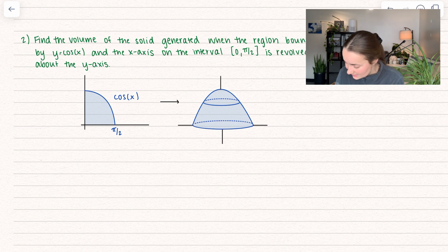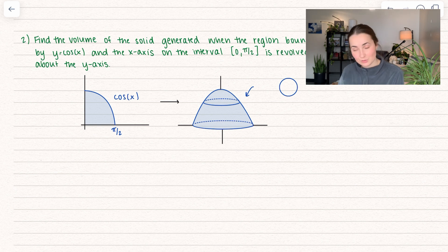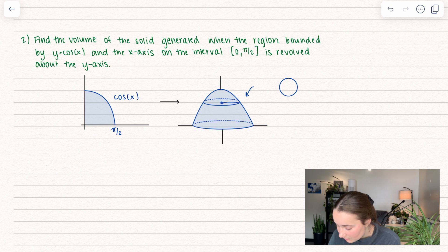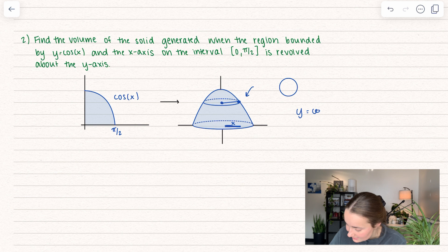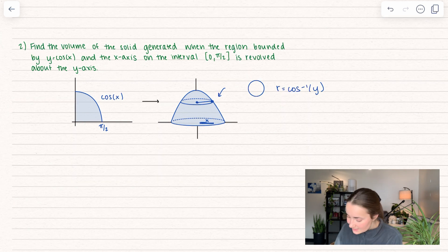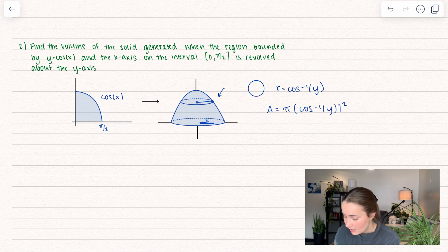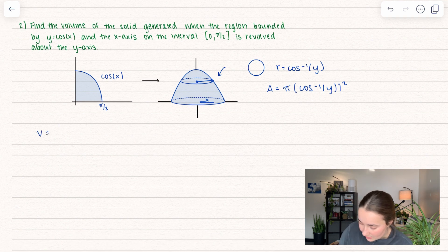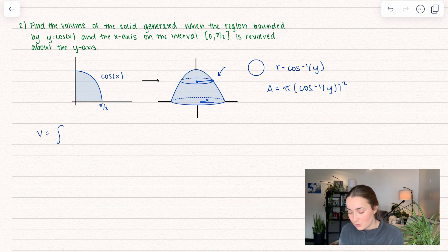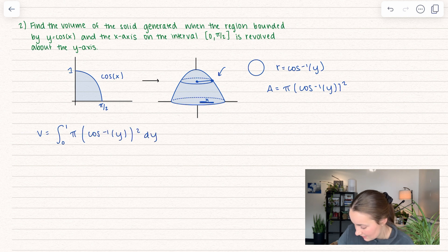We want to take a cross section, which I already drew in. We know this is going to be a solid circle, so let's talk about what the radius is going to be. Extending from our axis of rotation out to our function, this is going to be a length of x, and y equals cos(x). We solve for x: inverse cosine of y equals x. So the radius equals arccos(y), and the area formula becomes π (arccos⁻¹ y)². To find the volume we add up all the cross-sectional areas — this goes between 0 and 1 in y, not 0 and π/2, because those are the bounds for x.